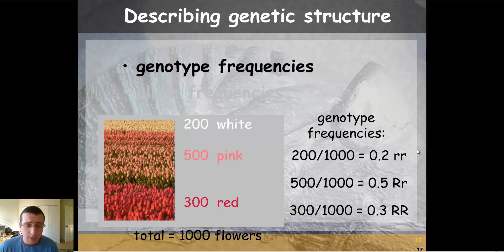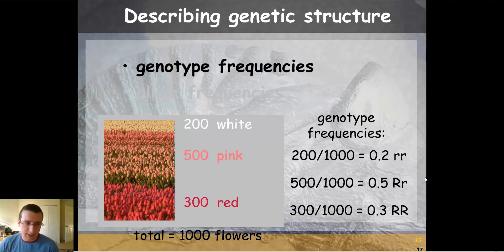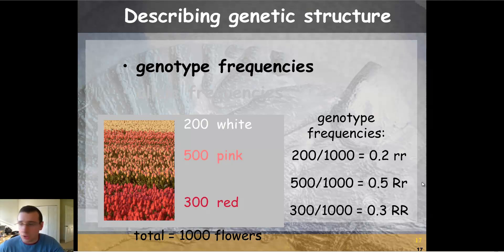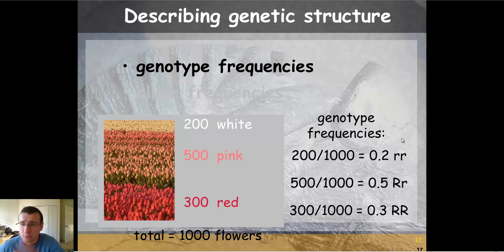If this were complete dominance, 80% of the population would have the dominant look, and we would not be able to differentiate between homozygous dominant and heterozygous just by looking at the phenotype numbers. We would have to do something else to figure that out.